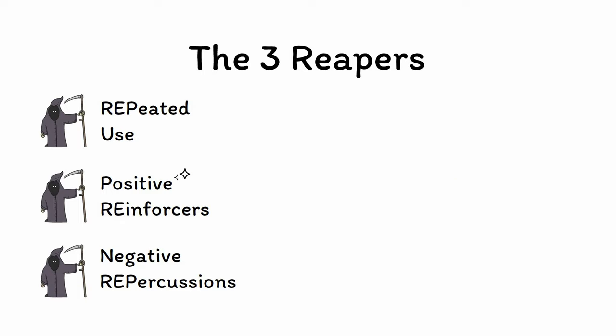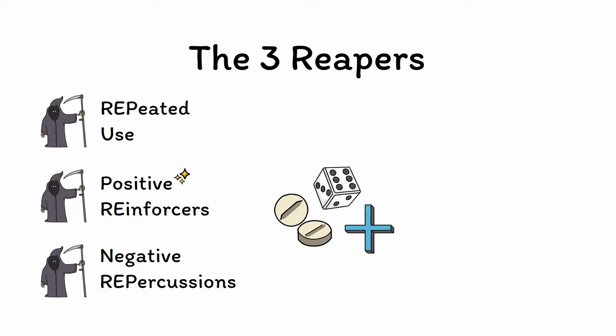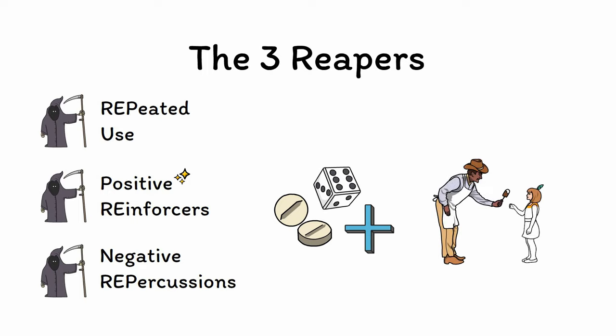Next is positive reinforcers. The specific substances and behaviors in addiction must be positively reinforcing. As a reminder from general psychology, a positive reinforcer is something that is given which increases the frequency of a behavior, often by giving a sense of pleasure. For example, giving a child a piece of candy for getting a good grade is using the candy as a positive reinforcer.